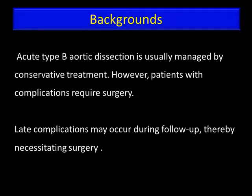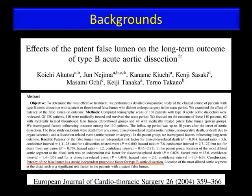Acute type B aortic dissection is usually managed by conservative treatment. However, patients with complications often require surgery. Late complications may occur during follow-up, thereby necessitating surgery. Several studies have reported that early or late complications are related to the situation of the false lumen at the time of presentation.